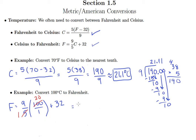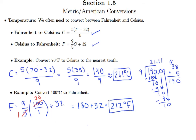So we just multiply 20 by 9. 9 times 20 is 180, because 9 times 2 is 18, then just add the 0 to make 180. Then finally we add 32, and when we do we get 212 degrees Fahrenheit — that is the boiling point of water in degrees Fahrenheit.